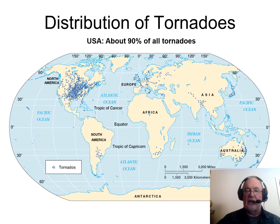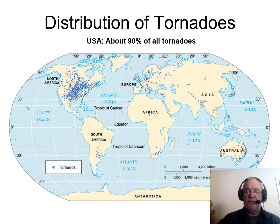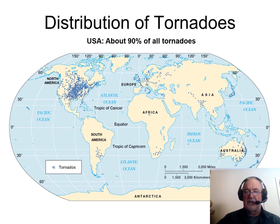We also get some tornadoes in South America, especially where cold air from Antarctica mixes with warm, moist Amazonian air pushed over the Andes. Southern Africa, Australia, and the islands of New Zealand — especially the South Island — also get tornado activity due to the Southern Alps. There's also activity near the Himalayas and the Annapurnas, and in Europe.